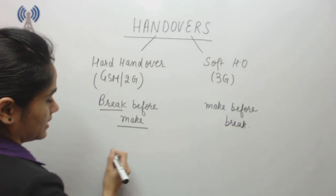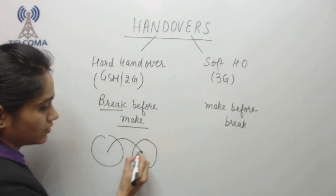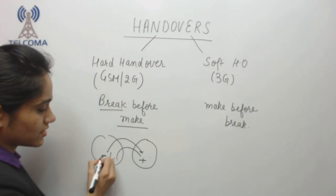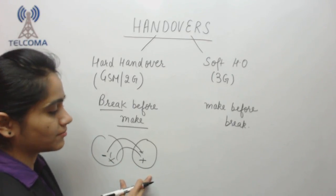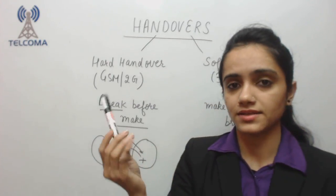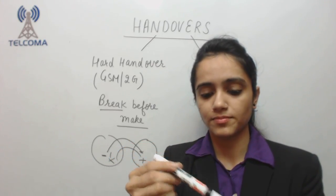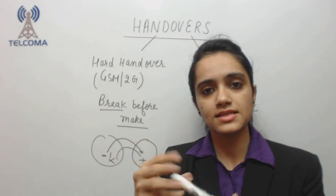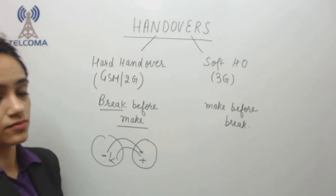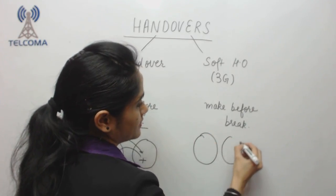In break-before-make, when passing from one cell to another, the UE must first break its connection with the home cell and then make a new connection with the foreign cell. So it releases first, then connects — break before make. This concept is used in hard handover in 2G.